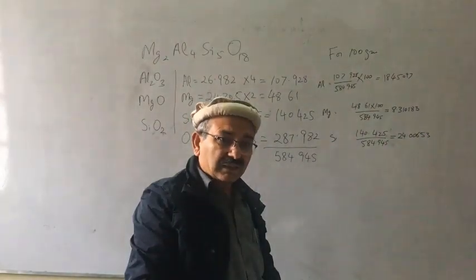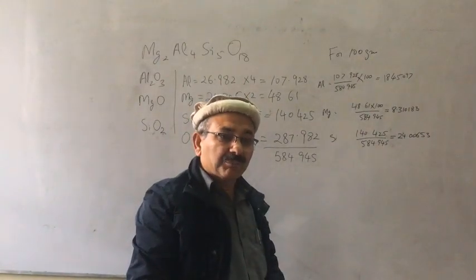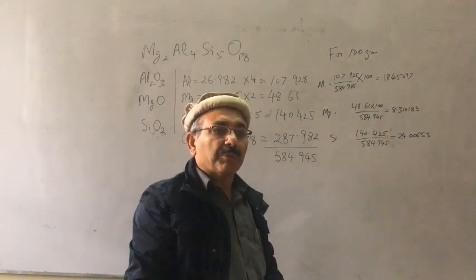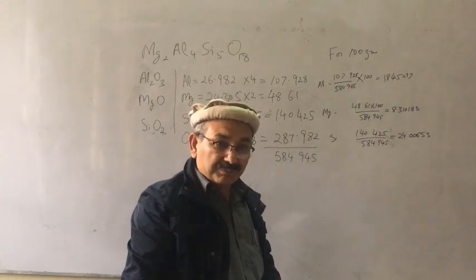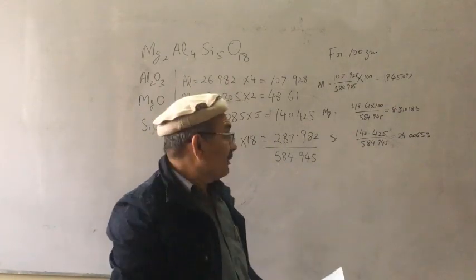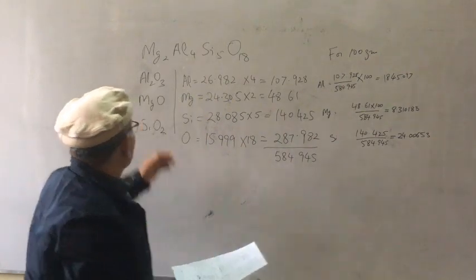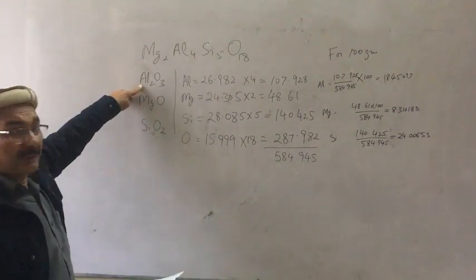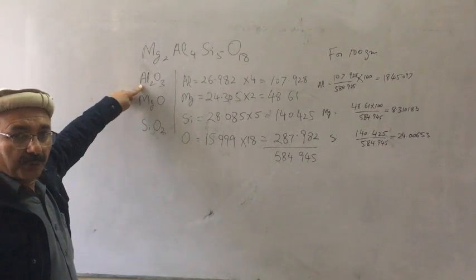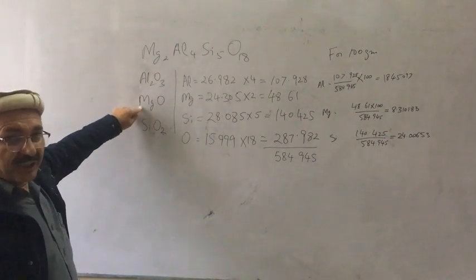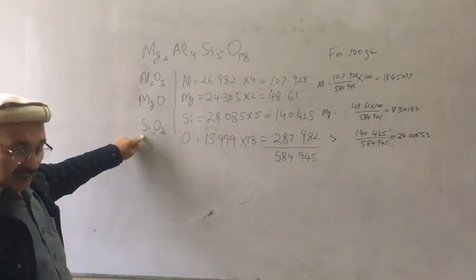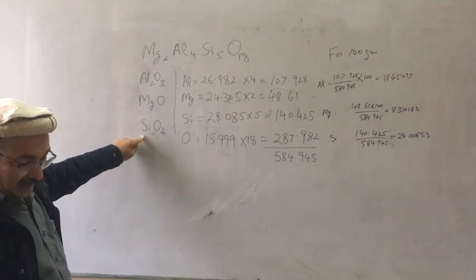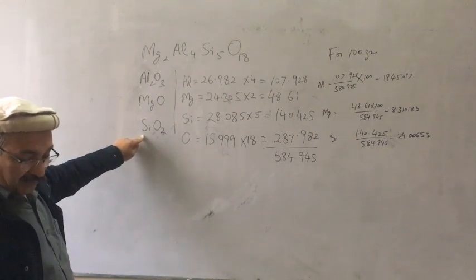Remember, this is the elemental composition. But you don't have raw materials in elemental form. The raw materials you have are in the form of Al₂O₃ for aluminum, MgO for magnesium, and SiO₂ for silicon.